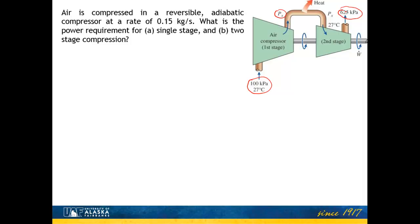So we'll go ahead and solve this problem first, doing the single-stage compression, which means my inlet conditions will be 100 kPa and 27 degrees Celsius. And we're going to go all the way to 625 kPa in a single step. A couple other important things to notice here is we've got air, and so under these conditions we can assume that air is acting as an ideal gas. It's occurring in a reversible compressor, so we're going to be looking at the minimum work requirement, and it is also adiabatic.